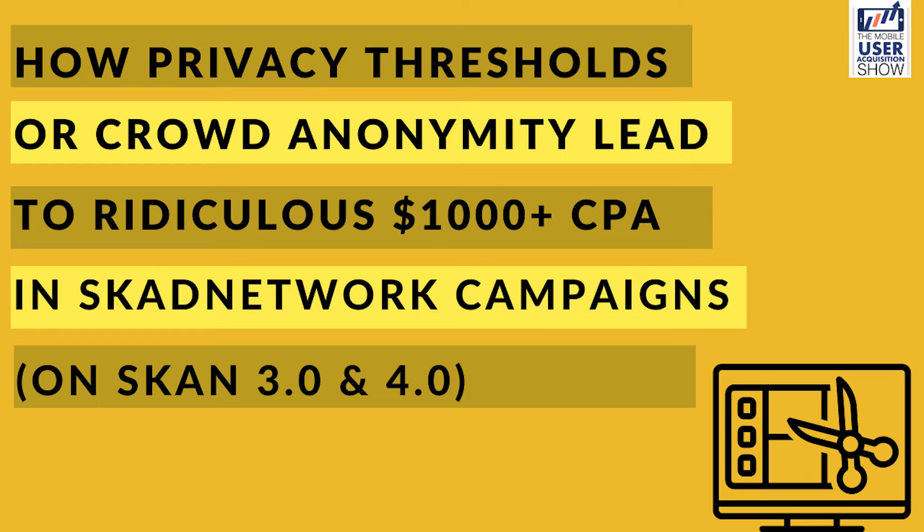As a result of this, many events — purchases, registrations, or trials — that happen outside of the first 24 hours do not get recorded, resulting in very high CPAs and very low ROASs. That's one part of the explanation, but there is another and most significant yet insidious reason: the privacy threshold, which is also referred to as crowd anonymity in Apple's WWDC session on SKAdNetwork 4.0.